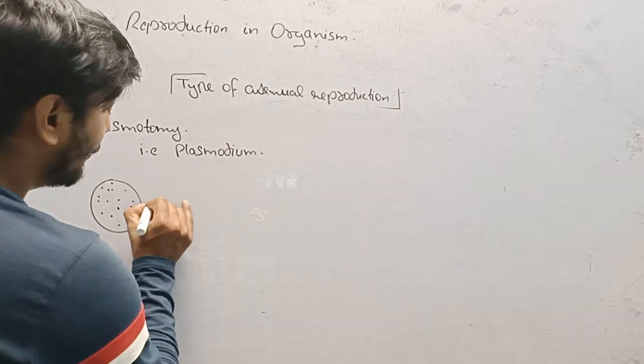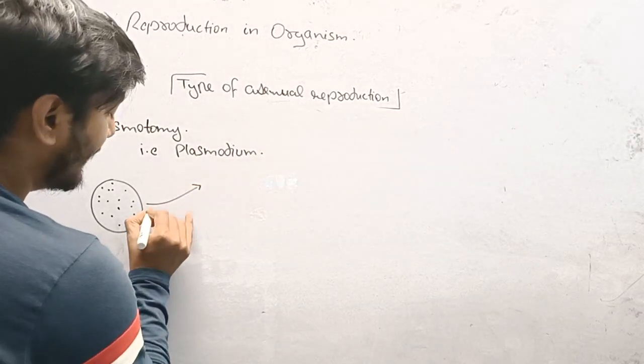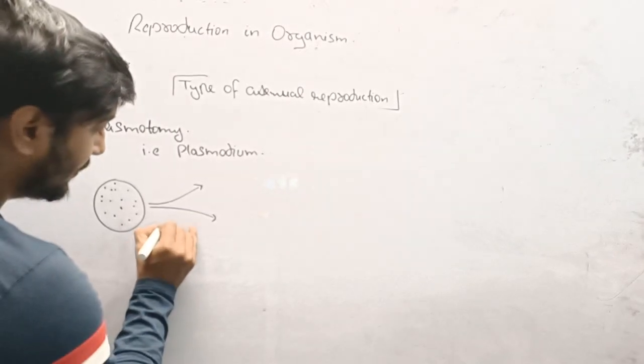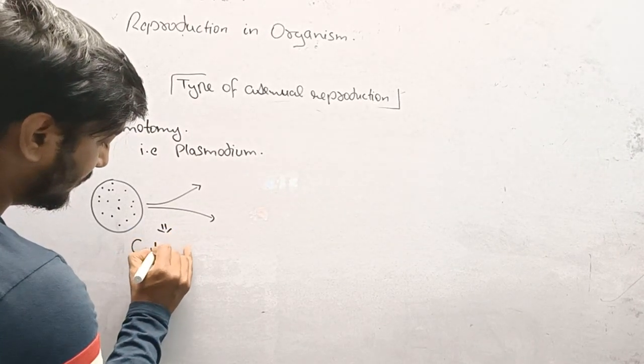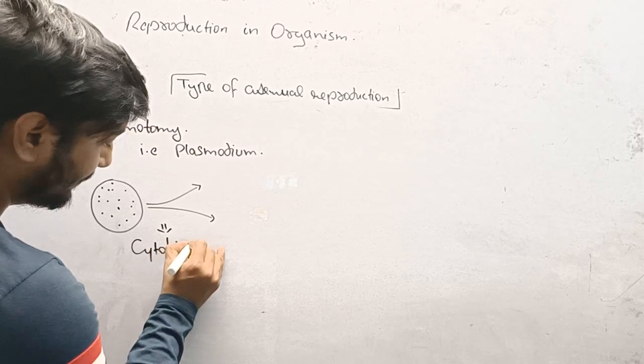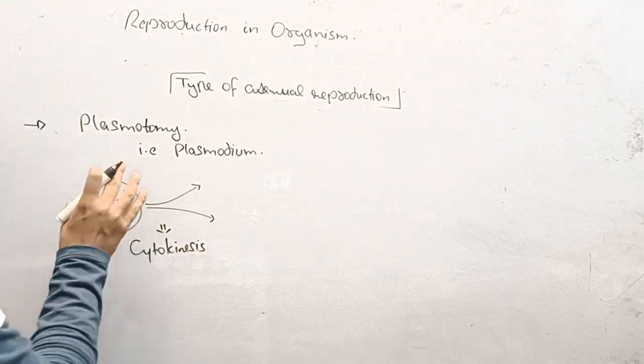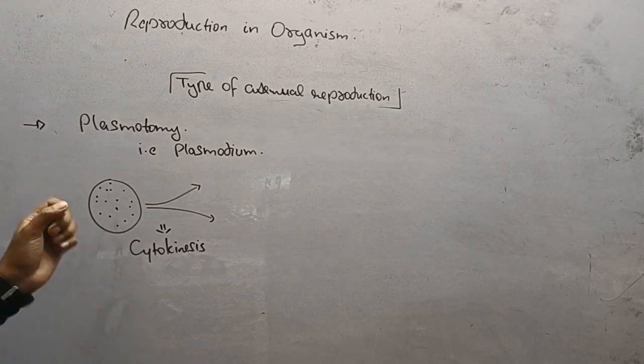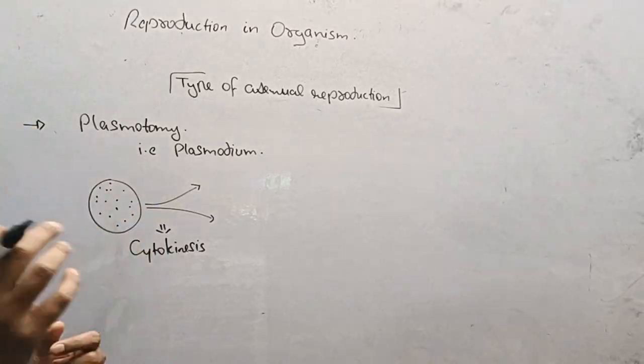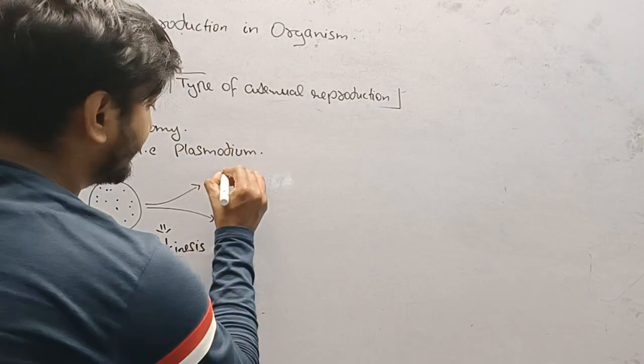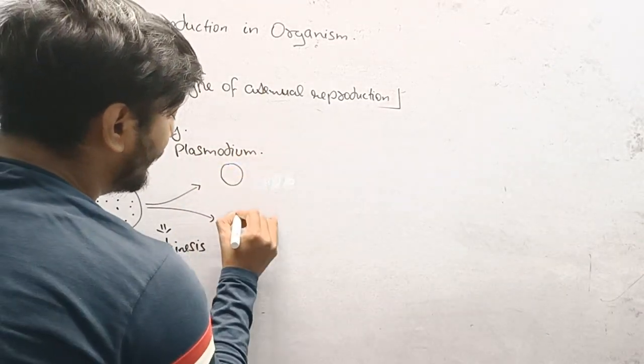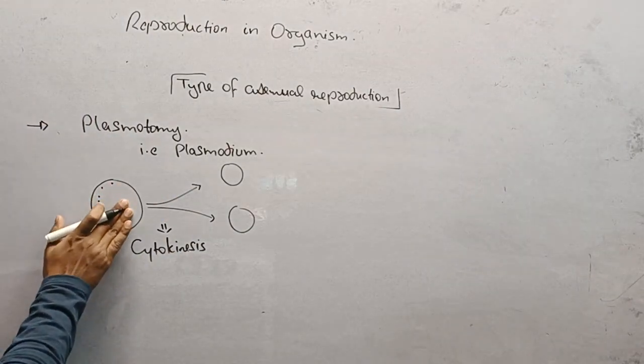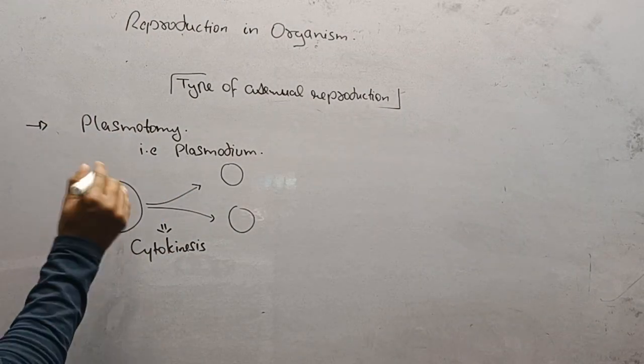This body divides into two halves by a process known as cytokinesis. The body undergoes cytokinesis where the cytoplasm of both bodies gets divided into two daughter cells.